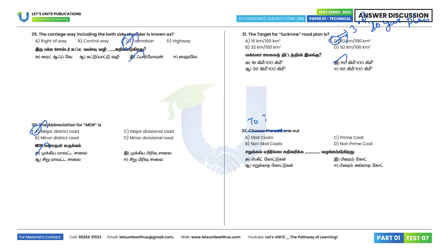32nd question: To increase skid resistance, DAS (Dense Asphaltic Surface) is provided. Option B is the correct answer.